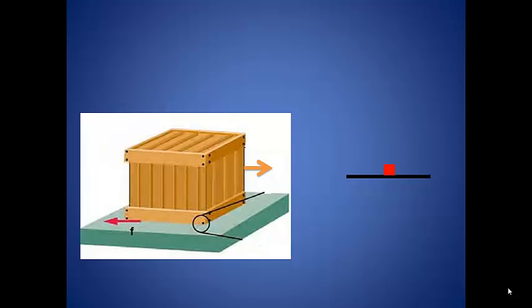If we draw a free body diagram for this box, we know that there is gravity acting downward and a normal force acting upward with the same magnitude. We know this because there is no vertical motion, so those two forces must be balancing each other.